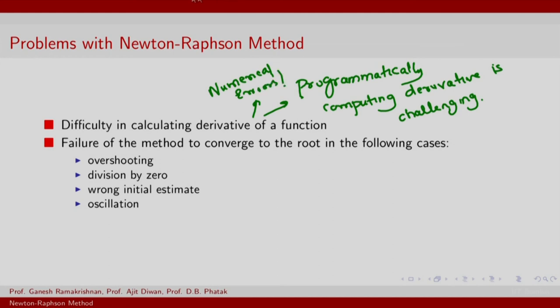There are also some classical cases when the function fails to converge to the root. The first example is overshooting.